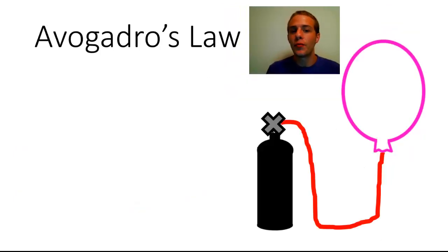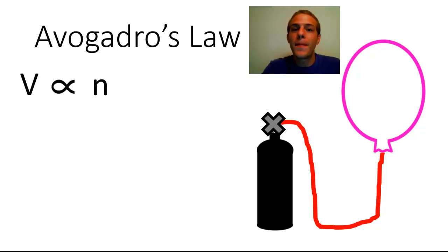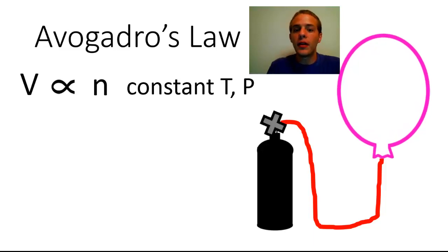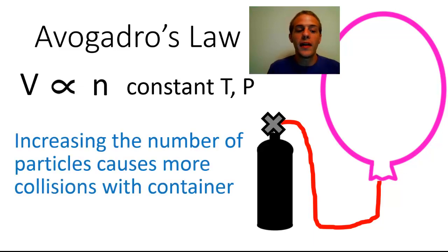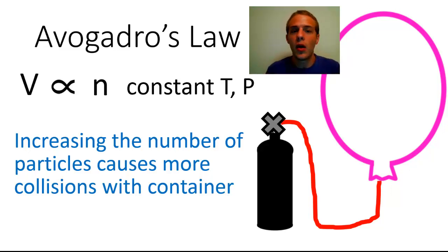Let's talk about Avogadro's Law. Avogadro's Law says that the volume of a gas is directly proportional to the amount of gas if you keep temperature and pressure constant. So if we had a balloon connected to a gas cylinder and let in more gas, the balloon is going to expand — volume goes up as the amount of gas goes up. The reason is similar to Charles' Law: increasing the number of gas particles causes more collisions within the container, and in order for temperature and pressure to stay constant, the volume has to increase.